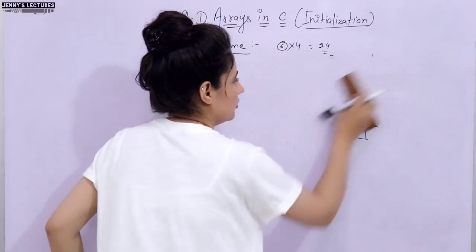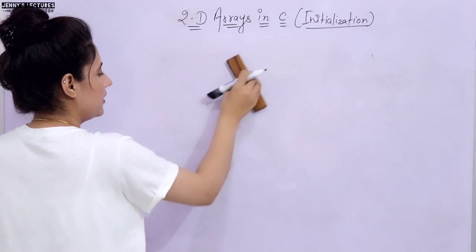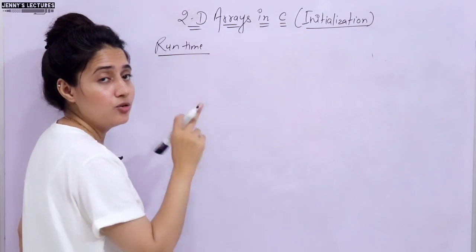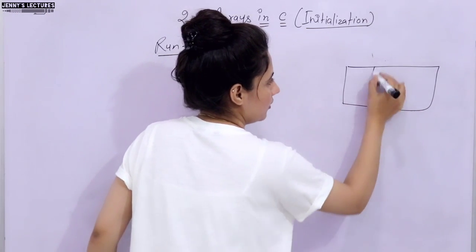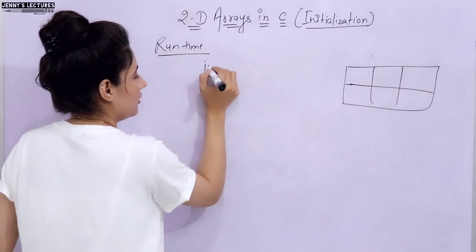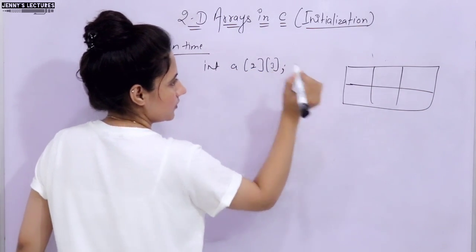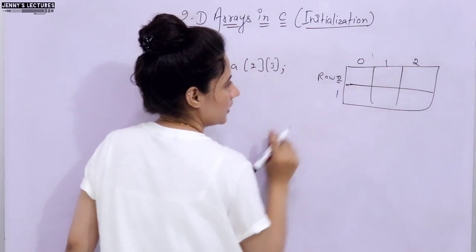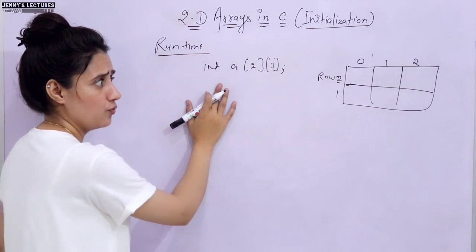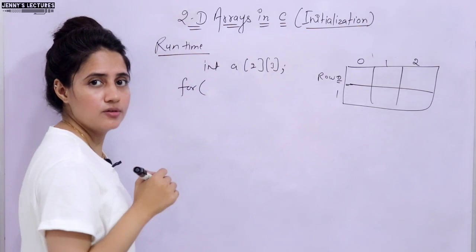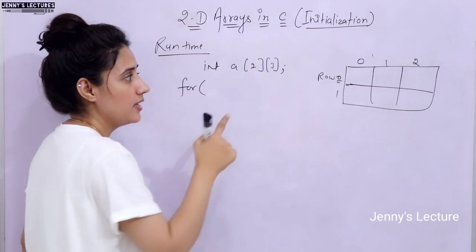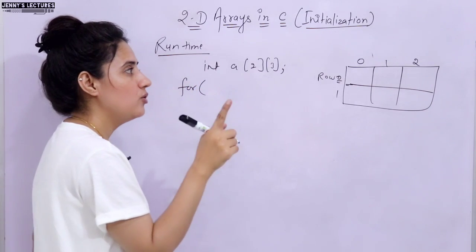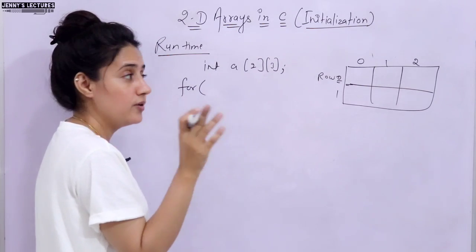The second type is runtime initialization. Just like initializing a 1D array at runtime using a for loop and scanf, here we will do the same — but with two for loops, i.e., nested loops. I have a video explaining the need for nested loops in the pattern programs series; I'll put the link in the sidebar.